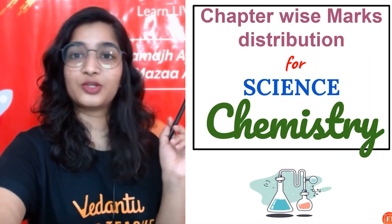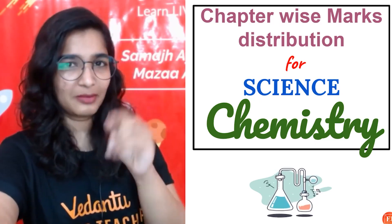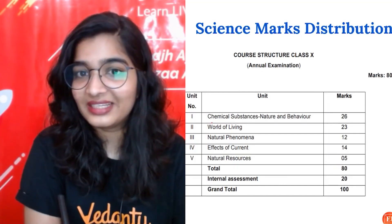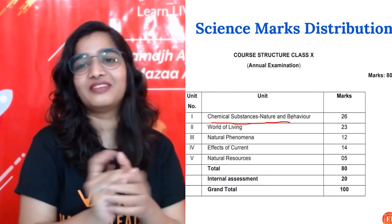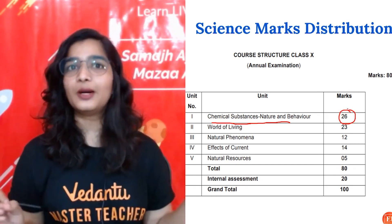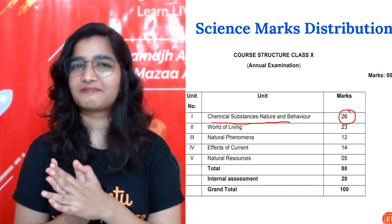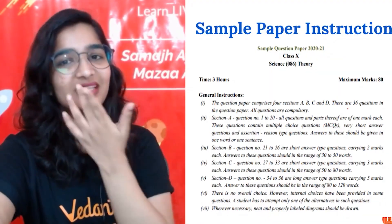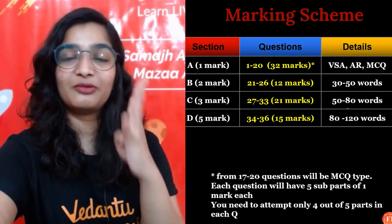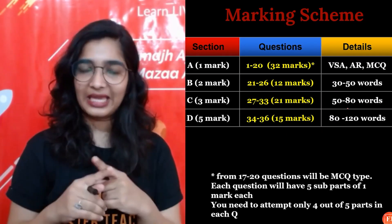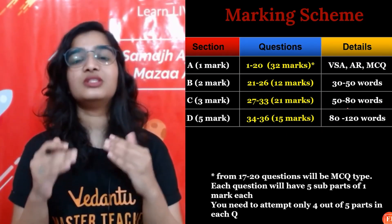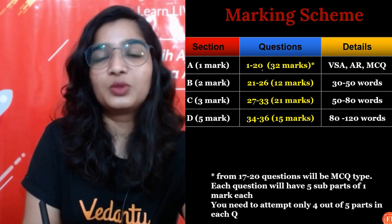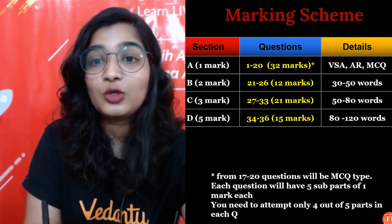Now, chapter-wise marks distribution for science — but our main focus is on Chemistry, specifically 'Chemical Substances: Nature and Behavior.' The total marks for Chemistry is 26. Looking at the sample paper: there are four sections — A, B, C, and D. Section A contains one-mark questions, B has two marks, C has three marks, and D has five marks. Section A has questions 1 to 20, totaling 32 marks.